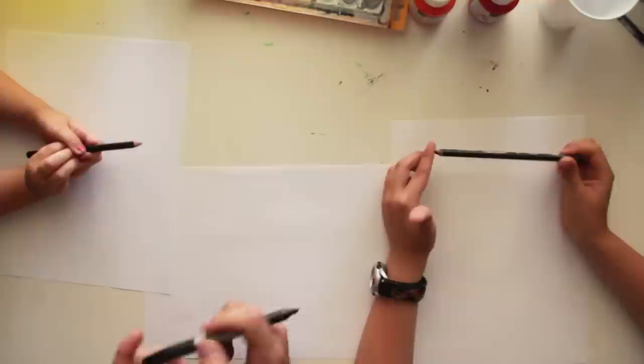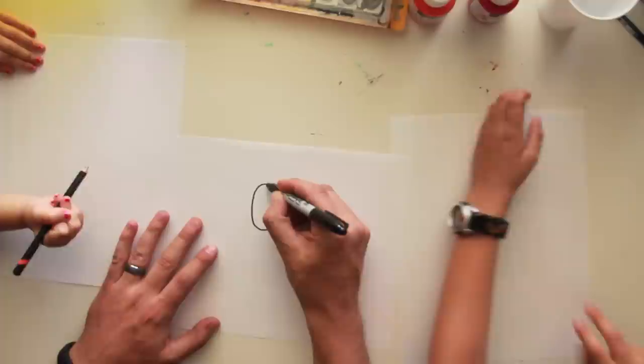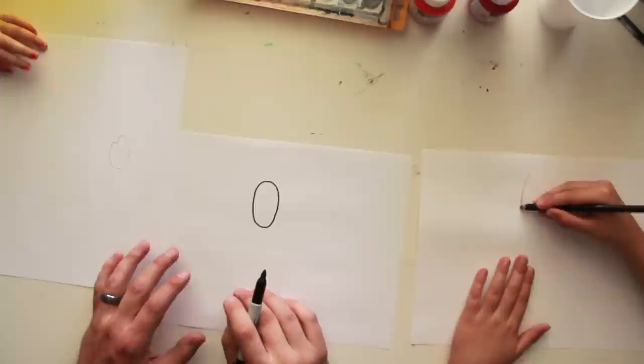Alright, so the first thing that we're going to draw is we're going to draw his body. We're going to draw the dragonfly's body. So right in the middle of your paper, draw an oval like this. Good job, Hats.